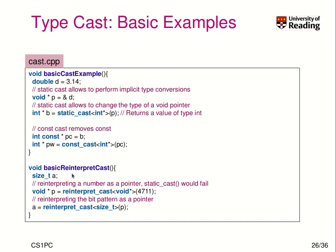For reinterpret_cast, the goal here is to reinterpret a number as a pointer. This is a hard conversion — it's normally dangerous and shouldn't be done casually. We specify that we want a void pointer back using reinterpret_cast. We can then go the other direction: from that void pointer, get back a size_t object using another reinterpret_cast.